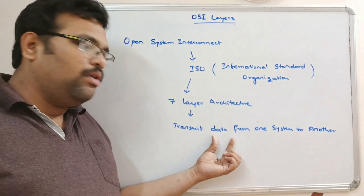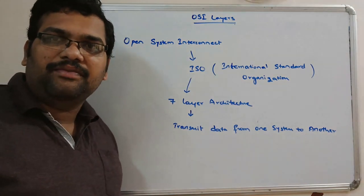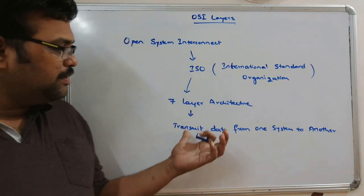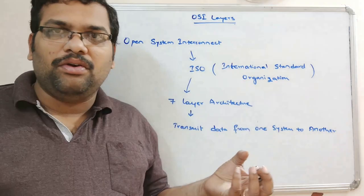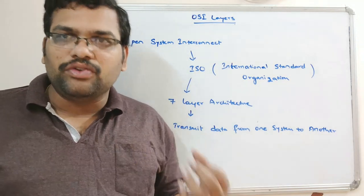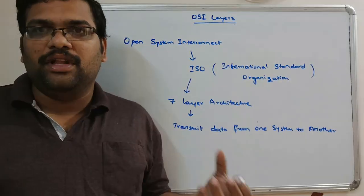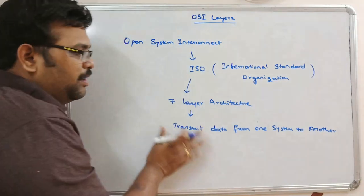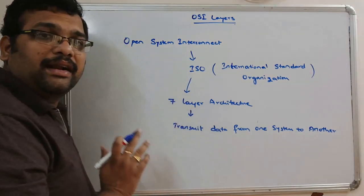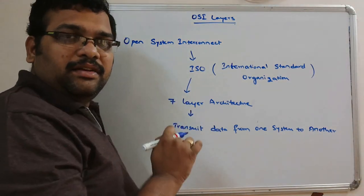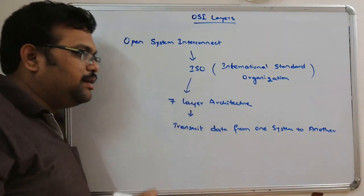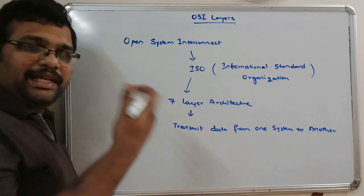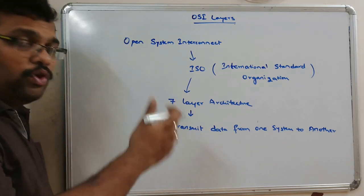All these layers collaboratively work for the transmission of data from one system to another system. In earlier sessions we saw that the main purpose of creating a network is resource sharing and data sharing. That process is done with the help of this seven-layer architecture. In this session we will see what these seven layers are, and in the next session we will go through them one by one.